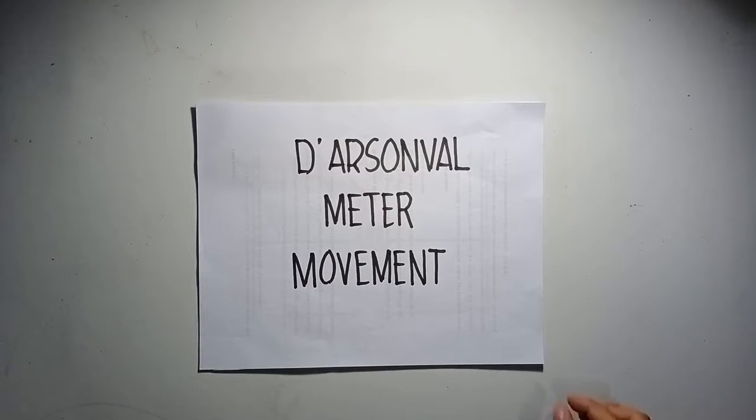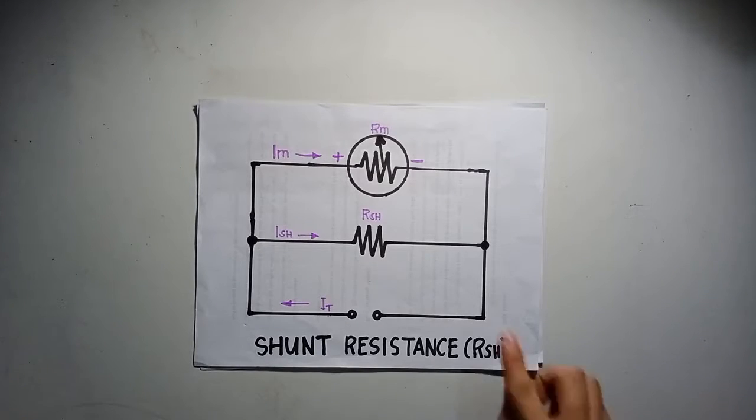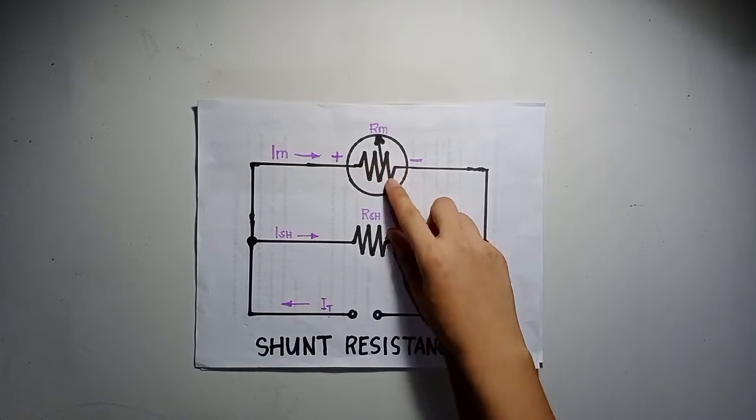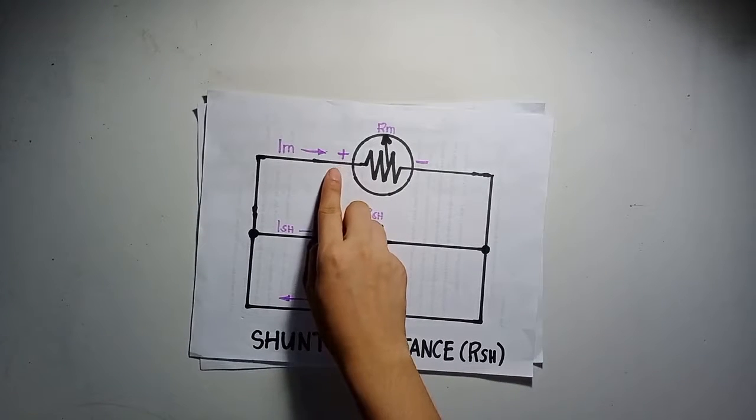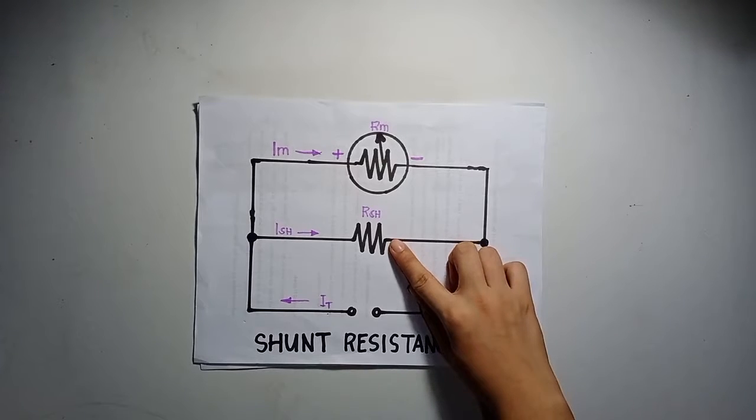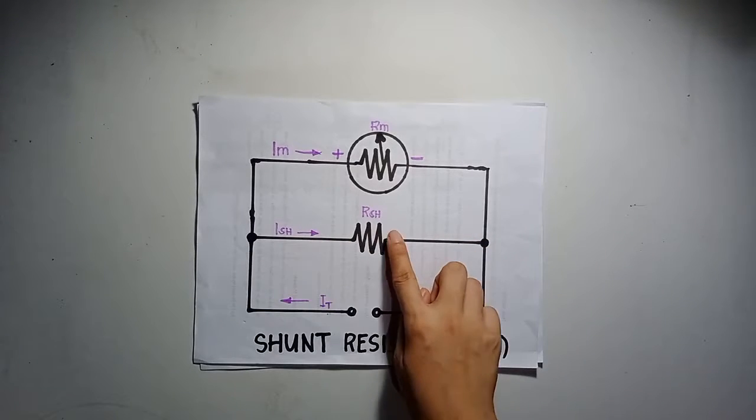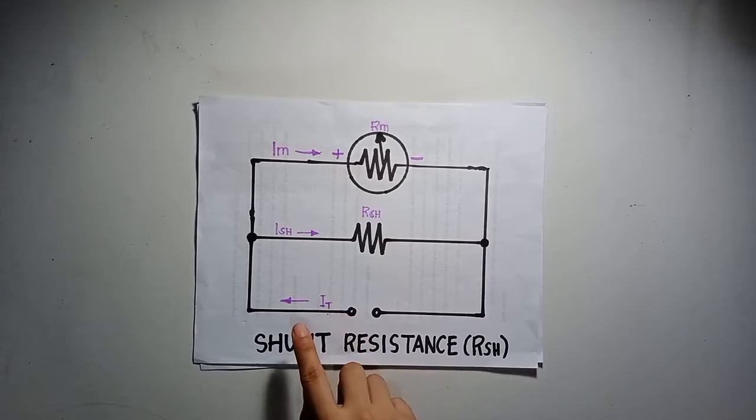The first one that we will be discussing is the shunt resistance, where Rm is the internal resistance of the meter, Im is the full-scale deflection current of the meter, Rsh is the resistance of the shunt, Ish is the current through the shunt, and It is the full-scale deflection current for a meter.